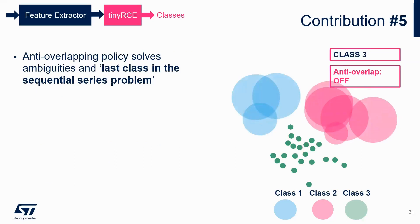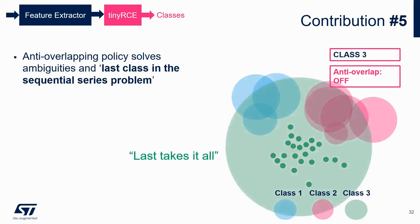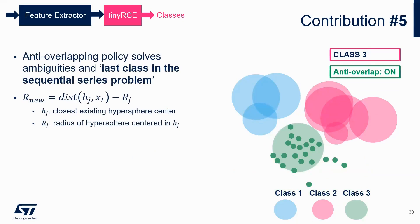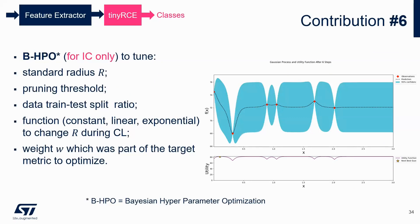The algorithm also suffered from another problem known as the last class problem. Essentially, what happens is that class by class there is proper sampling of the feature space, but the last class tends to create hyperspheres that overwhelm all the feature space, creating poor performance. By applying an anti-overlapping technique that we developed, we made sure that the last class doesn't overwhelm the feature space, as shown in this example.